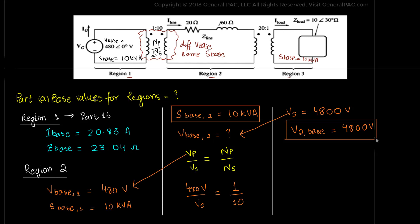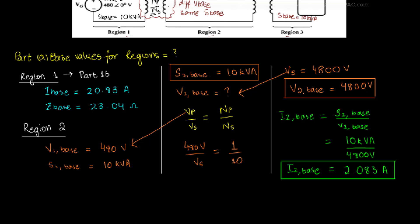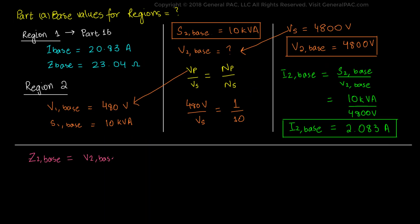Now we can easily calculate the other base values for Region 2. I2-base equals S2-base divided by V2-base, which is 10kVA divided by 4800V, which equals 2.083A. Z2-base equals V2-base divided by I2-base, which is 4800V divided by 2.083A, which equals 2,304 ohms.